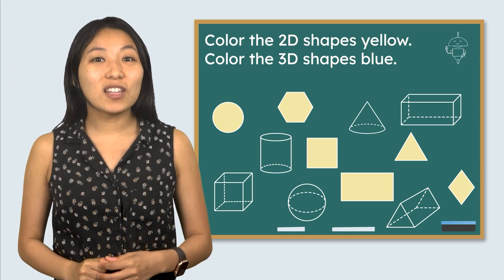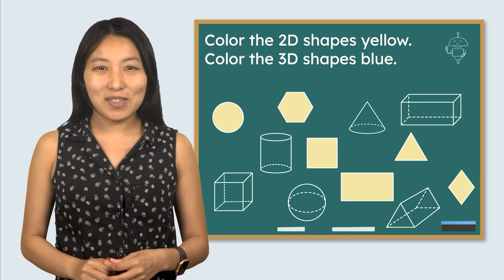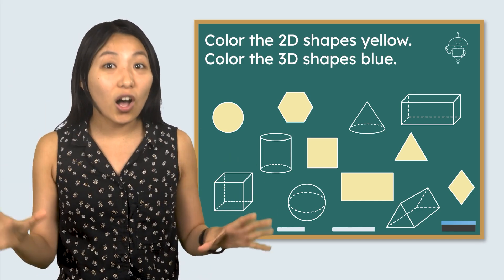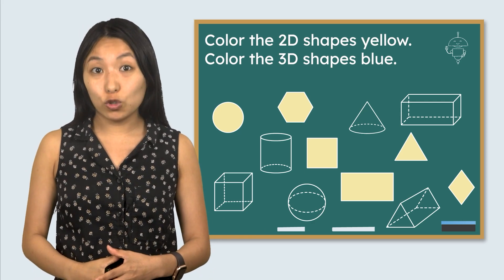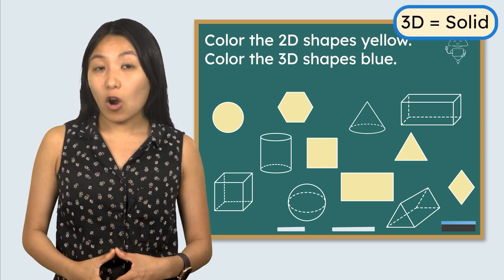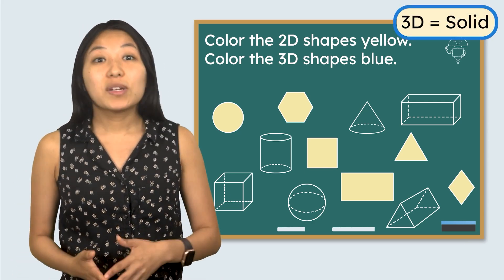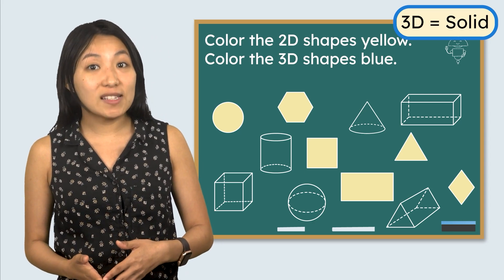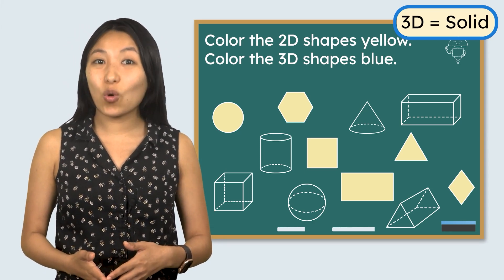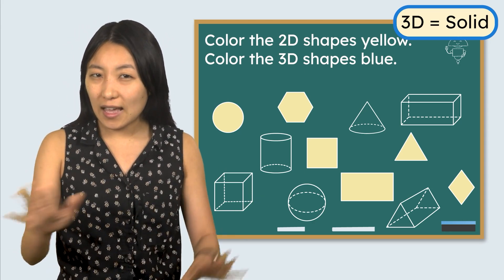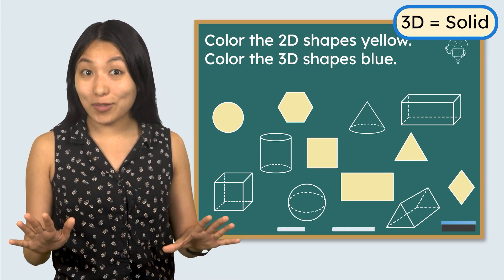I think we're ready for the last step of the math mystery. Color all of the 3D shapes blue. Solid shapes are also called 3D shapes. We can tell them apart because of their faces, edges and corners. Do you see any 3D shapes in the math mystery?